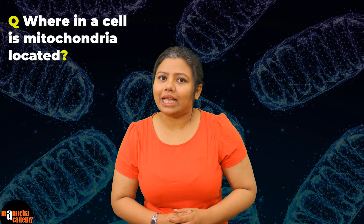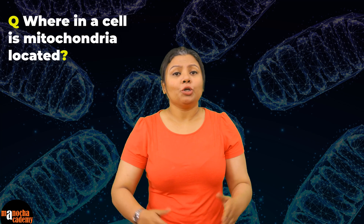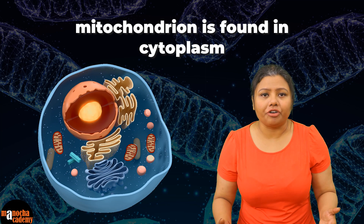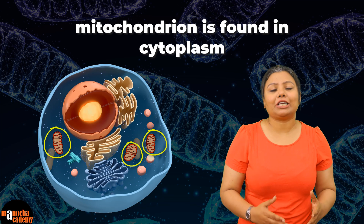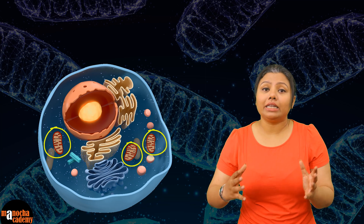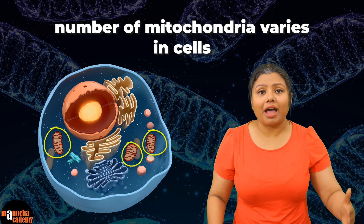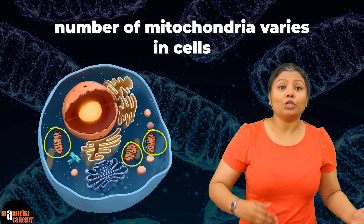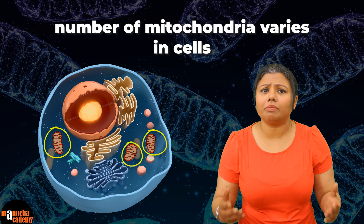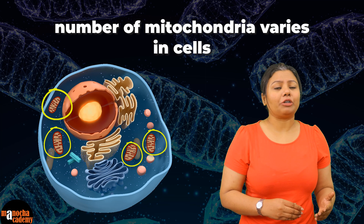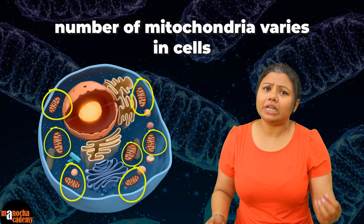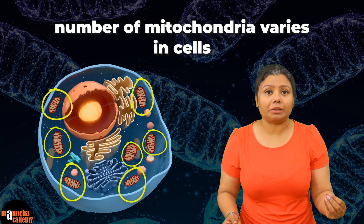Where inside the cell is mitochondria present? Inside the cell, plant or animal, a mitochondrion can be found in the cytoplasm, floating in the cytoplasm. The number of mitochondria varies from cell to cell. A cell responsible for production of a large amount of ATP will have more mitochondria than a cell that is not really involved in the production of ATP.